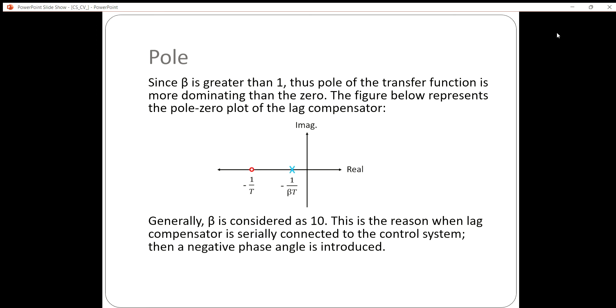Now, since β is greater than 1, the pole of the transfer function is more dominating than zero.